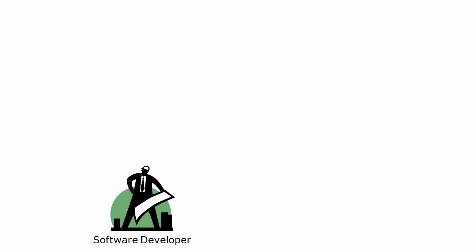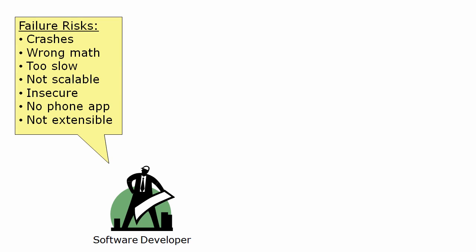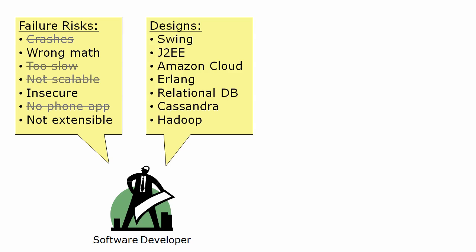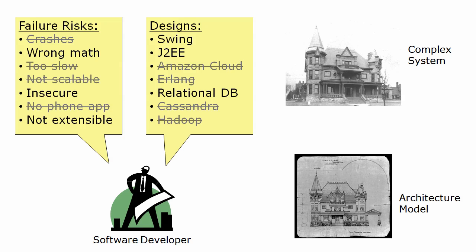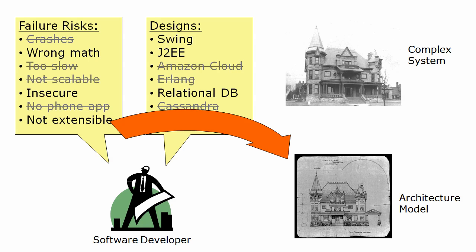Now we're ready to answer our question about architecture and design. Here's what differentiates them. As a software developer, you think about possible failures, you choose which kinds of failures you will try to avoid, and you think about lots of possible designs — excluding the ones that are susceptible to failures you're worried about. Since the system you will build is complex, you will do your reasoning with a model of the system. You will include details in your model only if they help you reason about the failures you identified. You omit other design details.